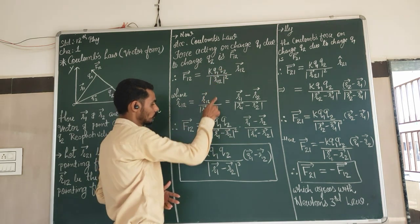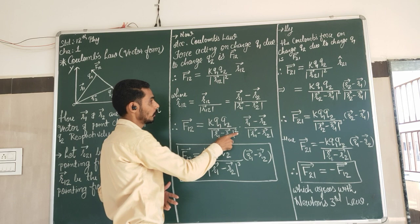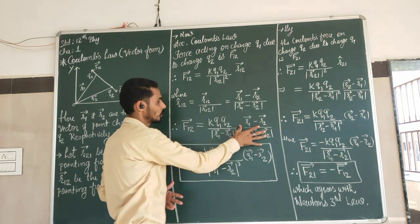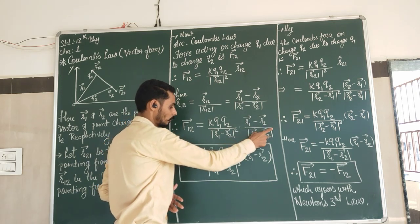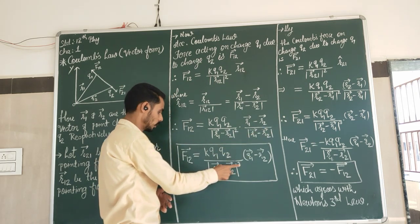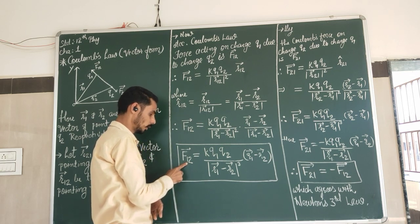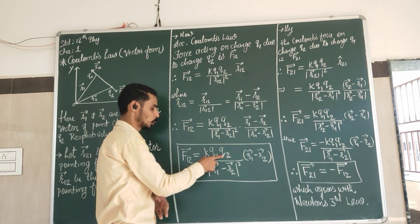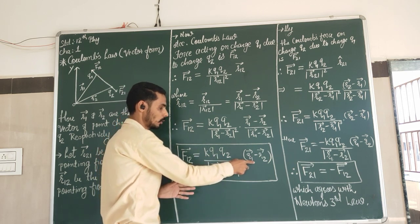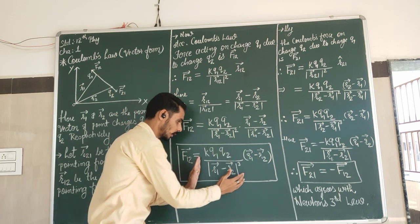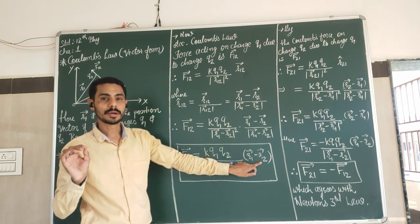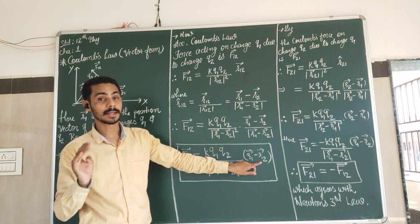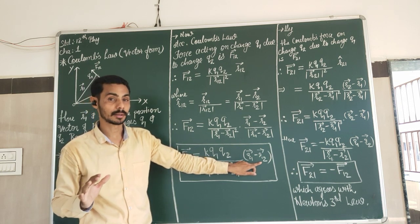Putting this value in: F12 equals K·Q1·Q2 multiplied by (R1 minus R2), divided by |R1 minus R2| squared, into (R1 minus R2) divided by |R1 minus R2|. The square and power 1 will become power 3, so the final formula for F12 is: K·Q1·Q2 upon |R1 minus R2| cubed, into (R1 minus R2). The magnitude part gives the value and the vector part gives the direction.